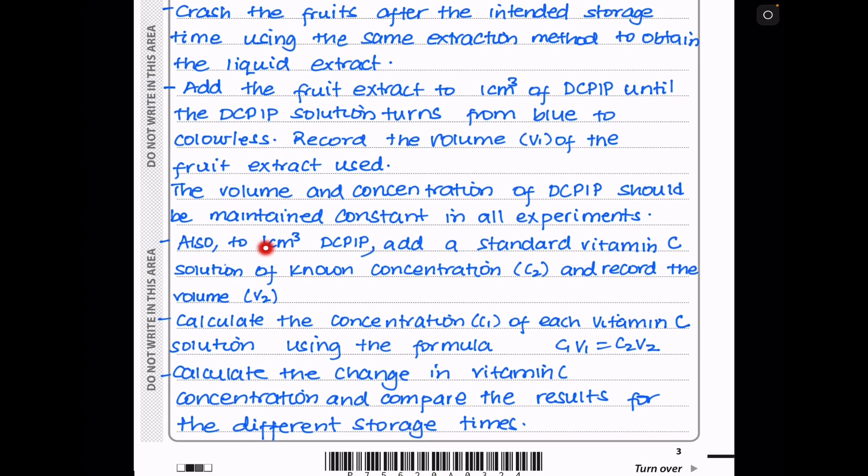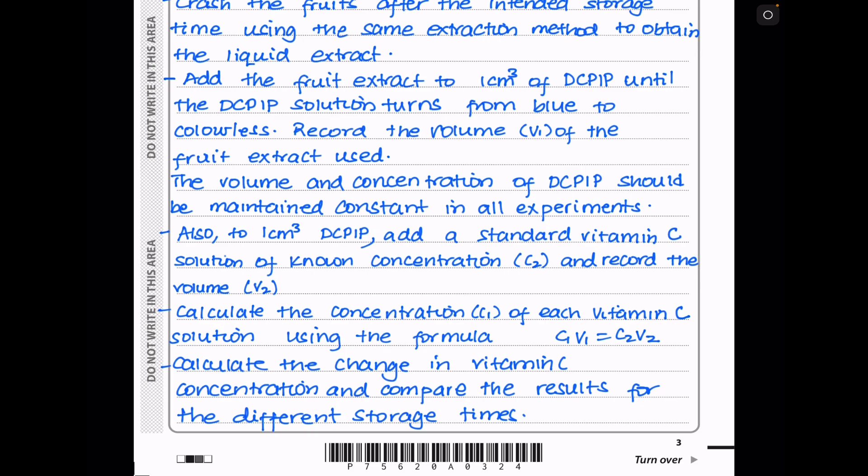Also, in another test tube, you could put 1cm cubed of DCPIP and add a standard vitamin C solution of known concentration. We can call this concentration C2, and then record the volume that is required to decolorize the DCPIP. Call this volume V2. Then you calculate the concentration, which is C1, of the vitamin C solution using the formula C1 times V1 is equal to C2 times V2. After that, then calculate the change in vitamin C concentration and compare the results of the different storage times.